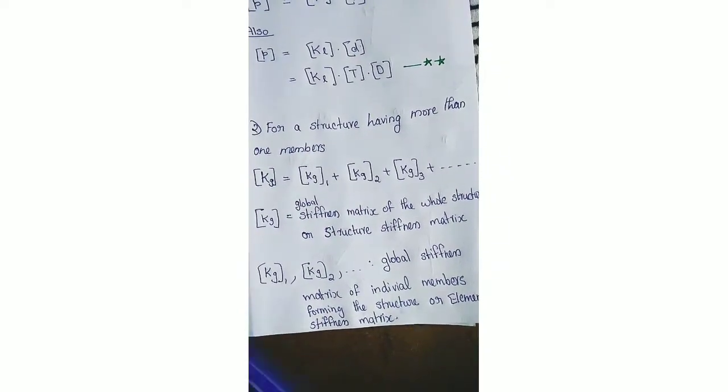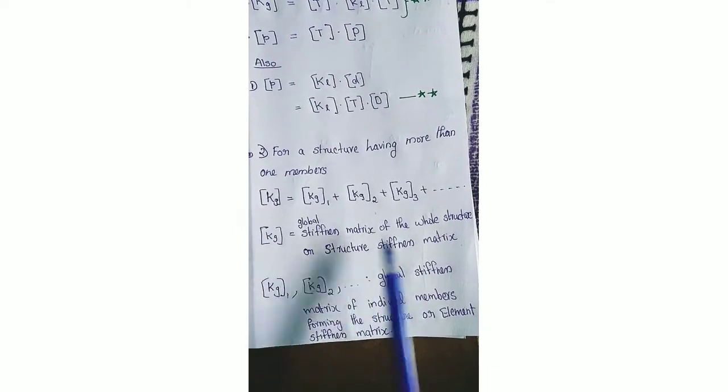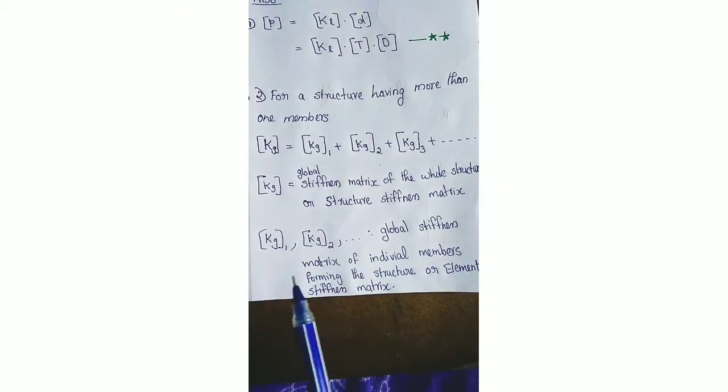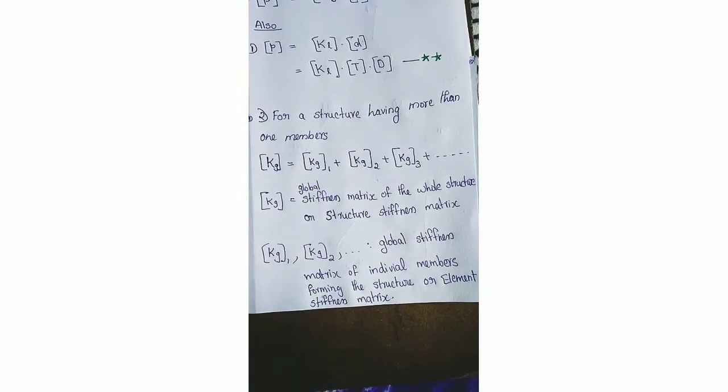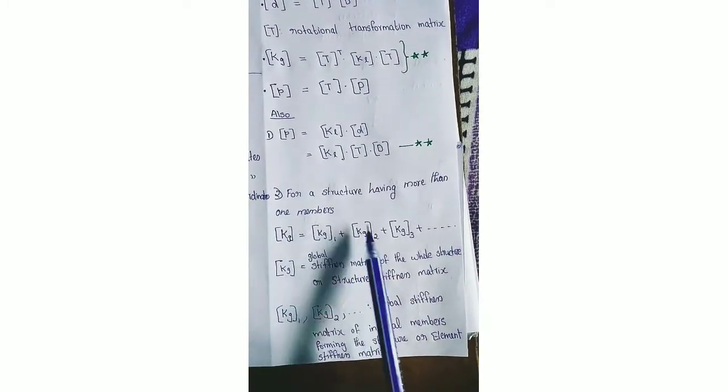One more basic relation: the structure stiffness matrix KG equals Kg1 + Kg2 + Kg3 + etc., where capital KG is the global stiffness matrix for the whole structure. A structure has many members, and for the whole structure there is a stiffness matrix called KG. Kg1, Kg2, Kg3, etc. are the element stiffness matrices, that is the global stiffness matrix of individual members forming the structure. To get the global stiffness matrix of a structure, we sum the global stiffness matrices of the individual members.